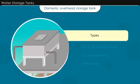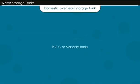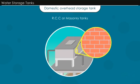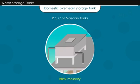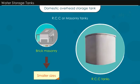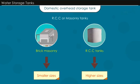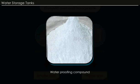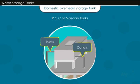Three types of tanks are usually used: RCC or masonry tanks, GI or metal tanks, and HDPE tanks. RCC or masonry tanks have traditionally been used since they can be easily constructed in any shape and size to suit the site dimensions. Brick masonry tanks are generally used for smaller sizes, while RCC tanks are adopted for larger sizes. Such a tank must be made watertight by adding a waterproofing compound in the concrete and plaster mix. All inlets and outlets must be inserted at the time of construction.